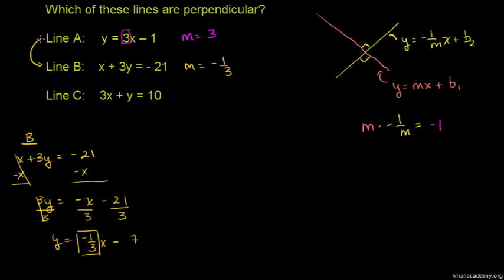Line A and line B are perpendicular. Line A, line B slope is negative inverse. 3 times minus 1 over 3 equals minus 1.